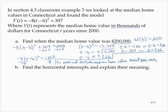Part B: find the horizontal intercepts and explain their meaning. Well, the horizontal intercepts, so horizontal means that the y, in this case V(t), would be equal to 0. The output would be 0.